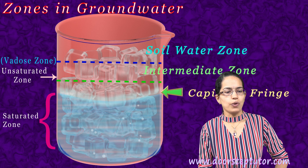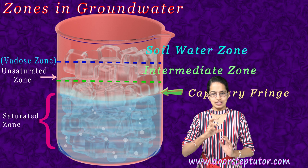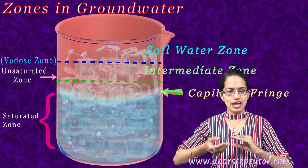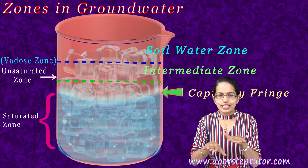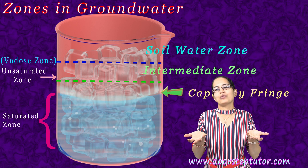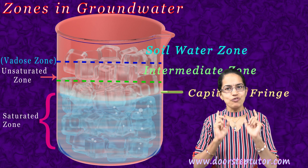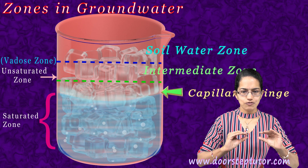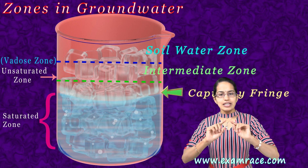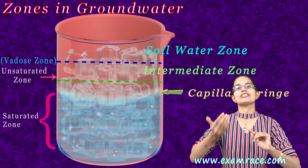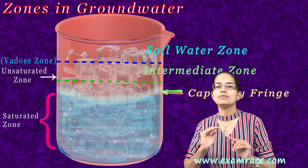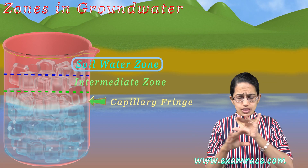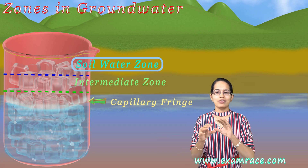Now why is the capillary fringe so important? This capillary fringe is a unique region just above the saturated zone. Here the water that is present is due to the capillary forces that are there. That's one of the very important reasons we say the water present in the capillary fringe, which is saturated, is above the water table or above the saturated zone — because the water is being held through the capillary forces present here.